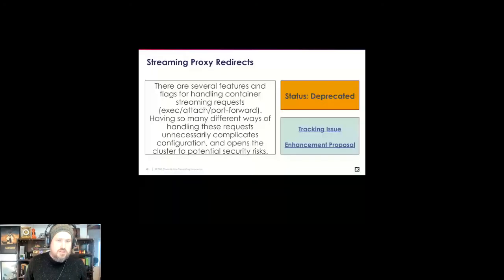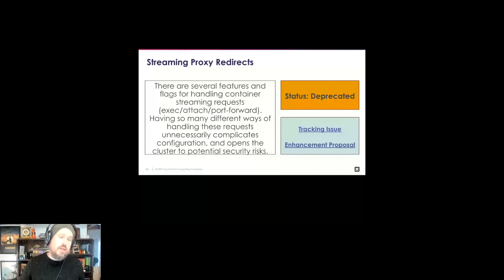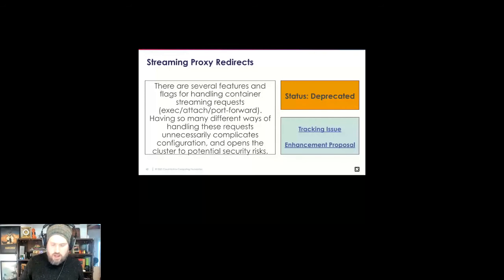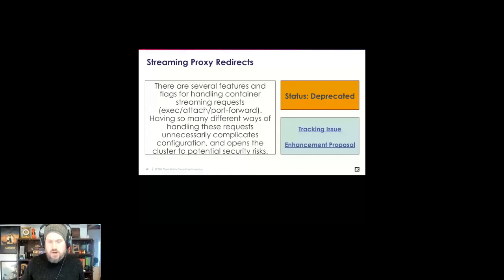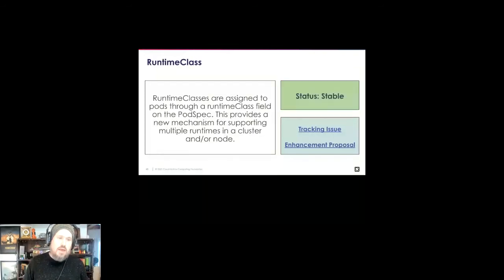There's a node-related deprecation simplifying the number of streaming requests that can happen to a node. There were multiple code paths that complicated configuration for end users and opened up more security problems. This condenses things down. Additionally, moving from stable through the SIG node items: runtime classes are going to stable — allowing multiple runtimes in a cluster, specifiable per workload in the pod spec.